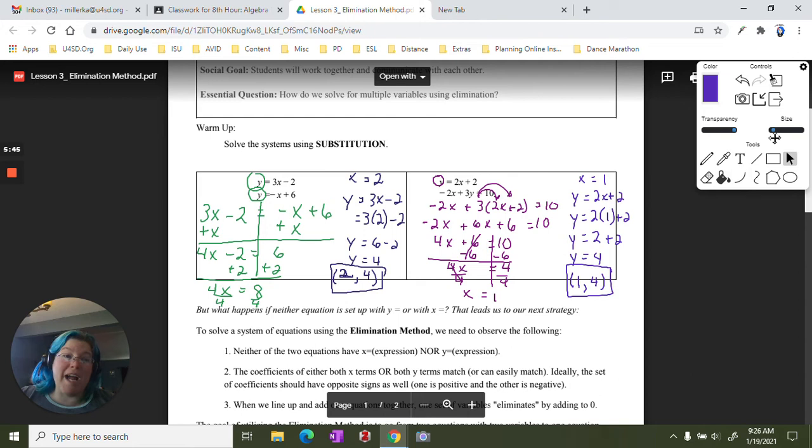But what happens if our problems are not set up with an x equals or a y equals? What if they're both in standard form? Do you remember that from first semester? Remember when we took an equation from standard form and put it into slope intercept form? Standard form, remember, has all of your variables on one side and your constant on the other. So for example, negative 2x plus 3y equals 10 is standard form.